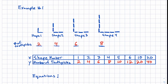Now we're going to think about what the equation would be. Y represents the number of toothpicks and X is the shape number. If we're making an equation with Y equals, we're basically saying the number of toothpicks equals what we do to the shape number. Shape number one had two — so we have to multiply whatever it is by two. We could simply say Y equals 2X, which means two times X.